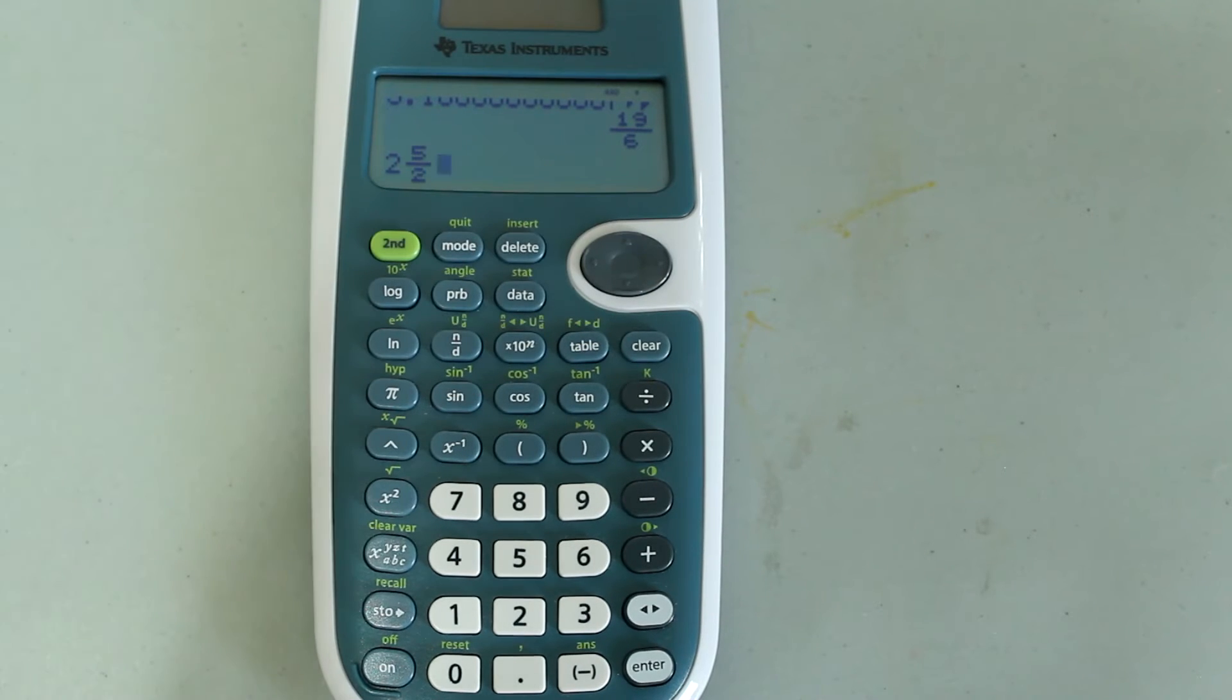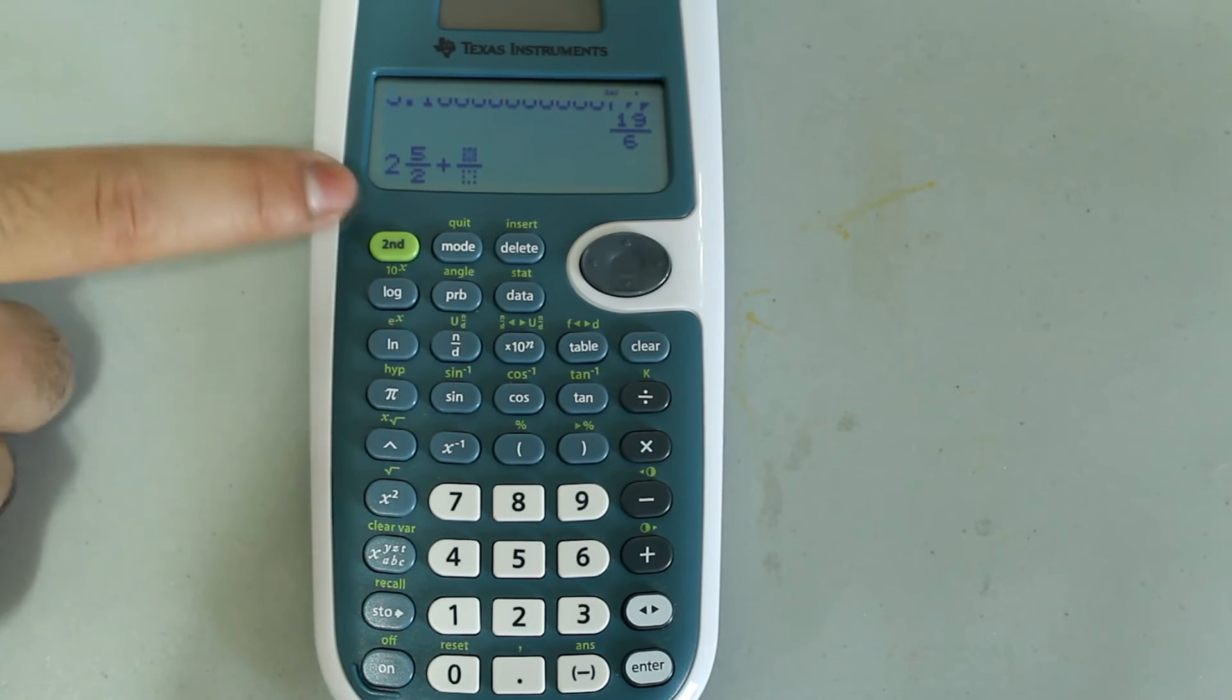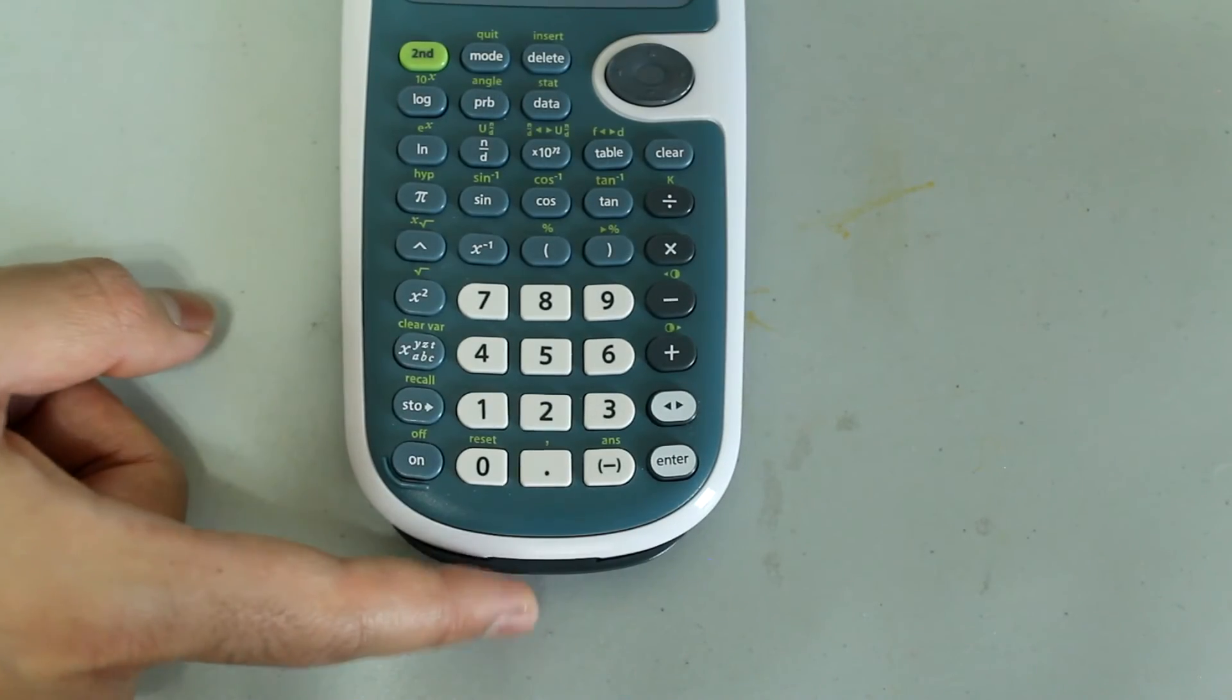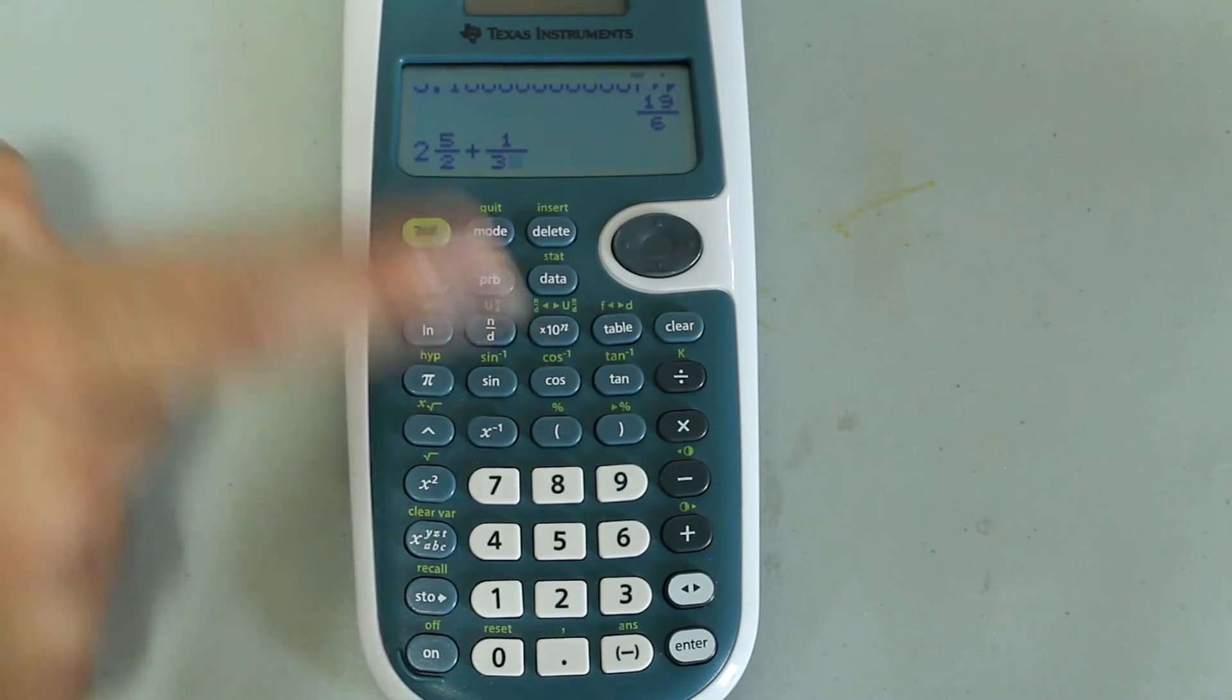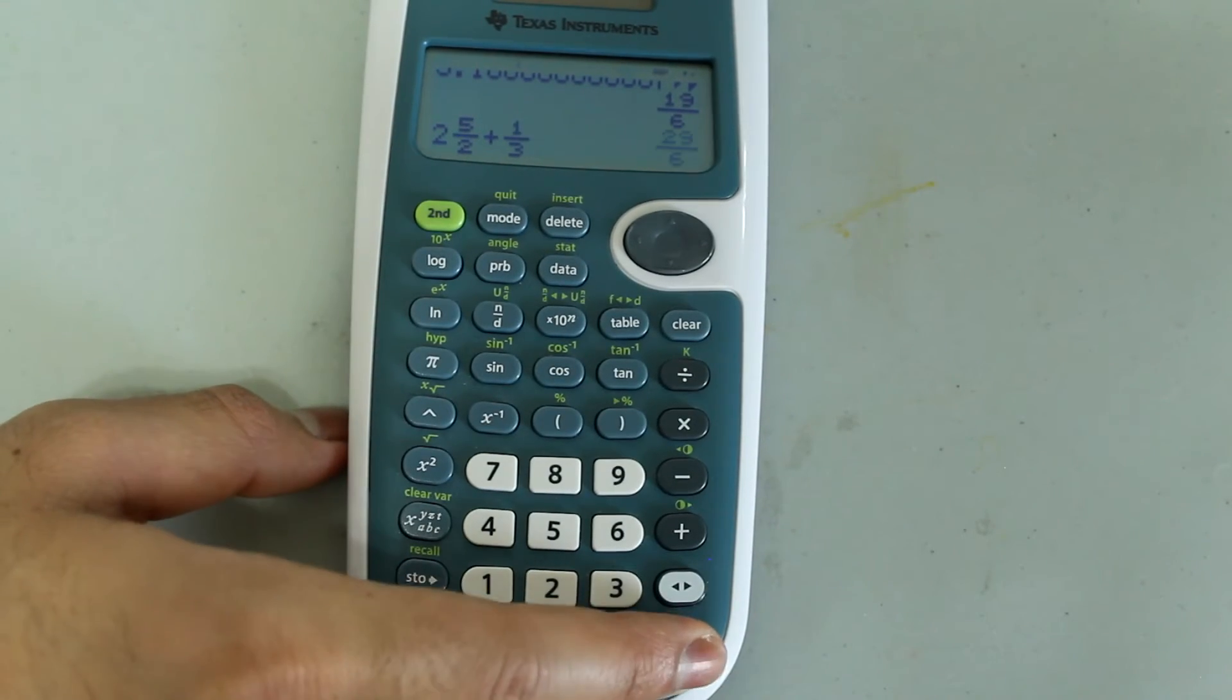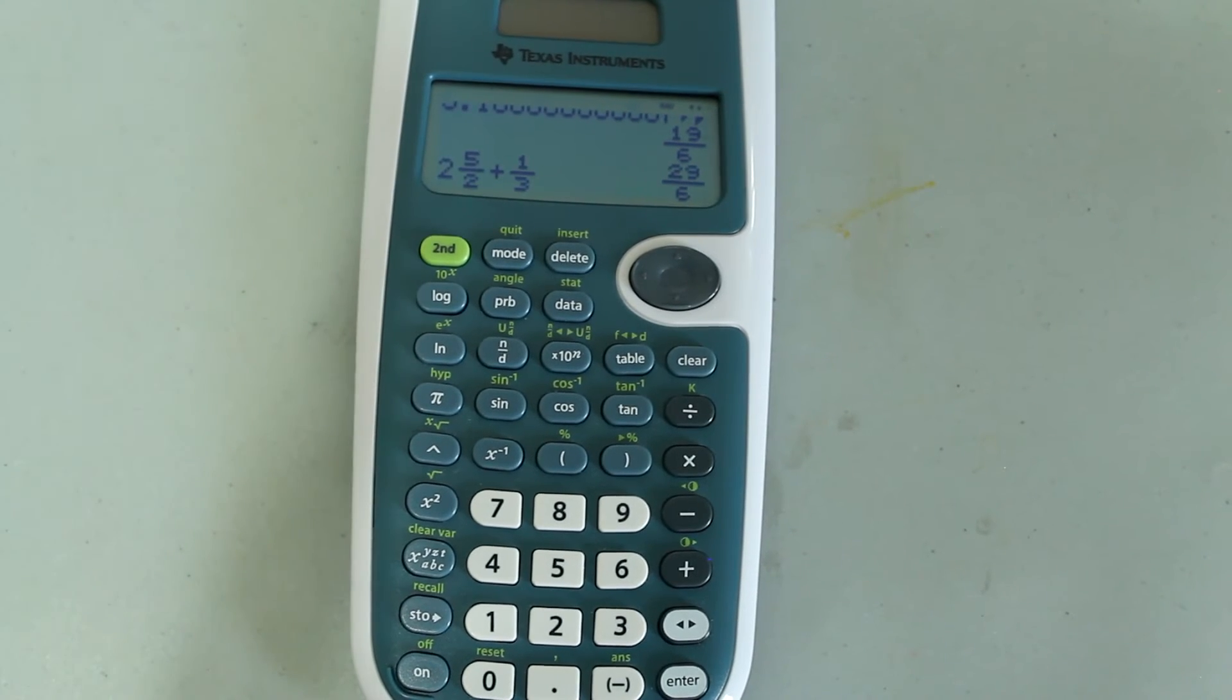Now to that, I'm going to add 1 third, let's say. So plus, and then just press the N over D button, and that brings up the ordinary fraction, the proper fraction form. So just type in 1, and arrow down, and 3. So we have 2 and 5 halves plus 1 third, and press enter. And once I press enter, I get 29 over 6 as my answer in fraction form.